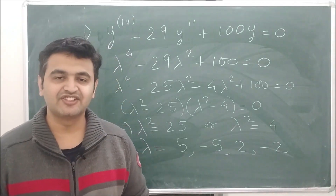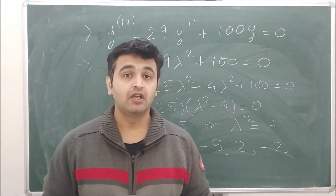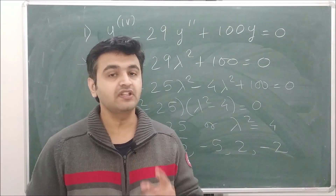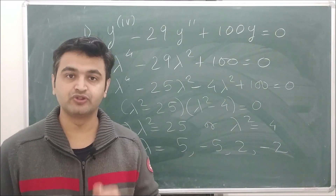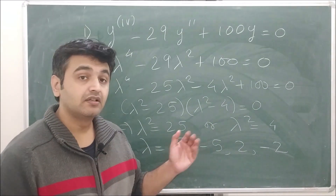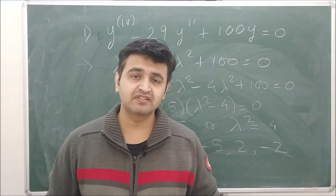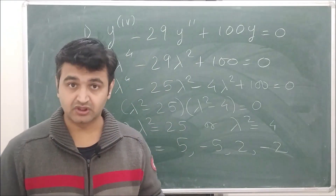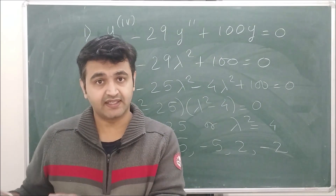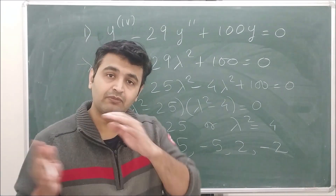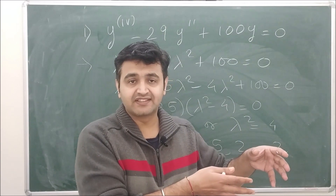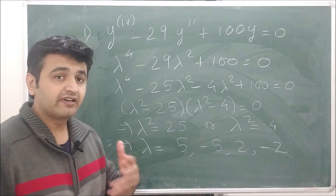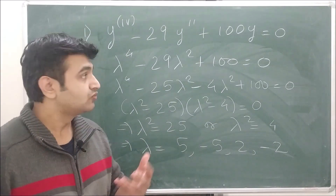Welcome to the 13th lecture on the course ordinary differential equations. Today I am going to take only examples on higher order linear differential equations with constant coefficients, homogeneous. I suggest you please see my previous lecture on second order homogeneous linear differential equations with constant coefficients, because whatever we did there — theory as well as examples — here I'm only going to generalize those examples to higher order.